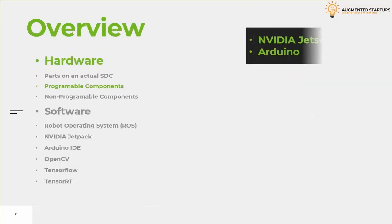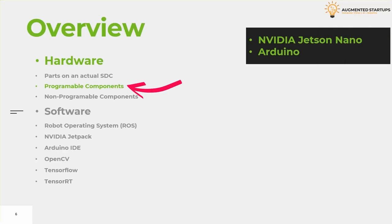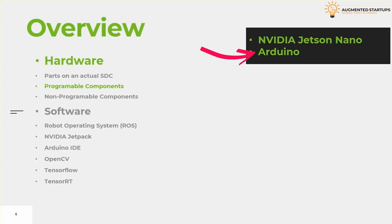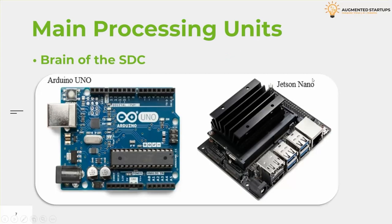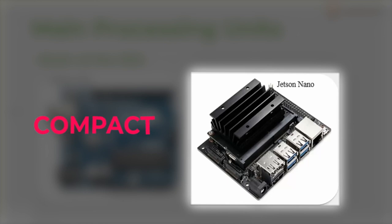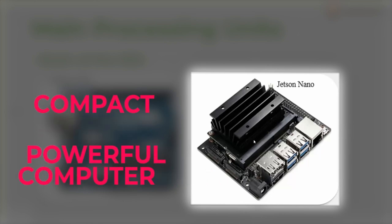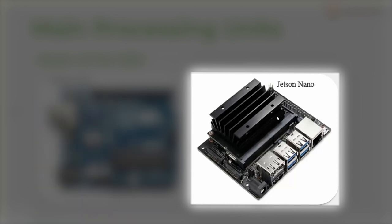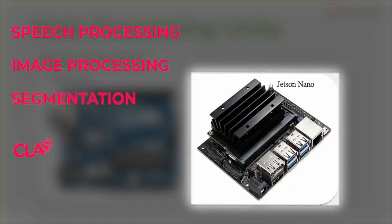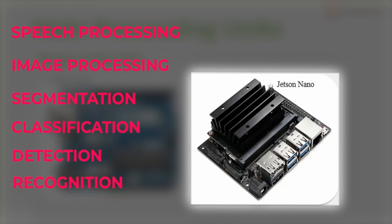In our model, there will be two main types of hardware: programmable and non-programmable. There are two fundamental units for programmable hardware: NVIDIA Jetson Nano and Arduino. Jetson Nano is our developer toolkit. It is very compact in size and capable enough to replace a powerful computer. Considering advancements in artificial intelligence, where neural networks and image processing functions demand high computing capacity, this mobile computer has been manufactured so that tasks like speech processing, image processing, segmentation, classification, detection, and recognition become very fast.